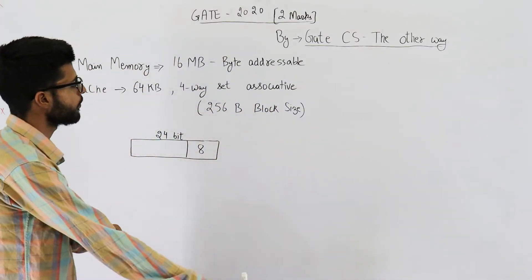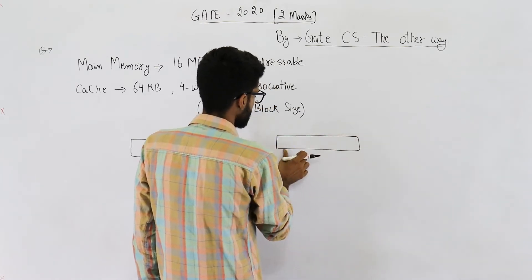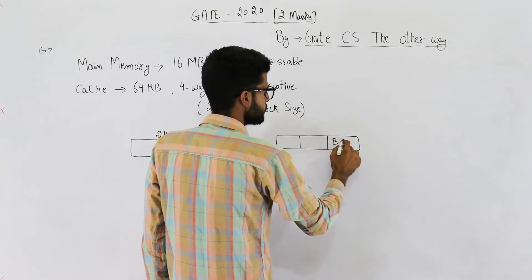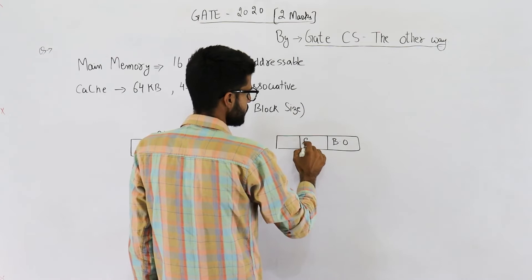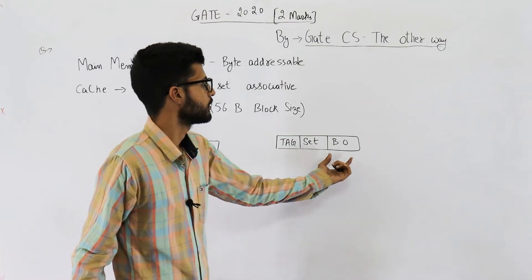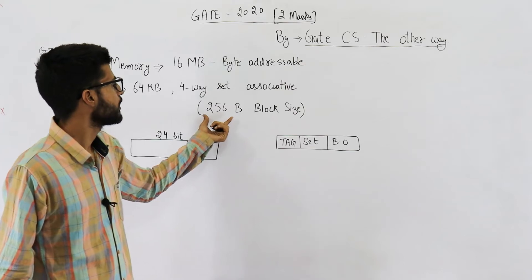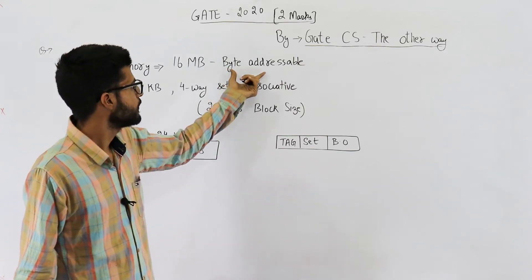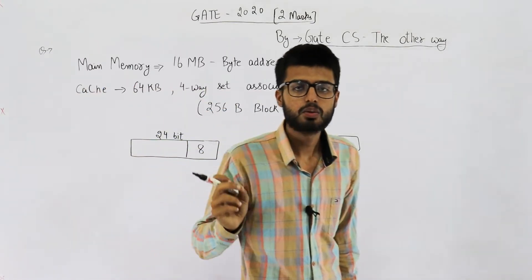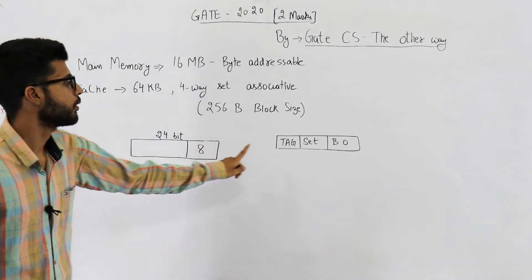Now let's solve the question. In k-way set associative mapping, we divide the physical address into three parts: block offset, set number, and tag. Block offset is used to identify one word from a block. The block has 256 bytes and the memory is byte addressable, so 8 bits are required to identify one byte from 256 bytes. Therefore block offset is 8 bits.